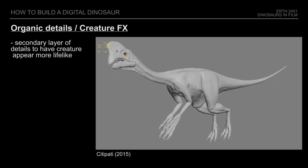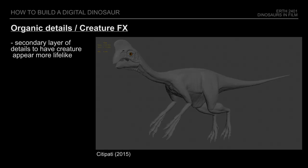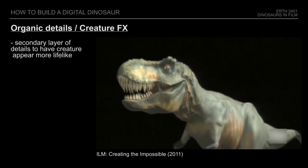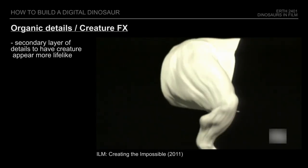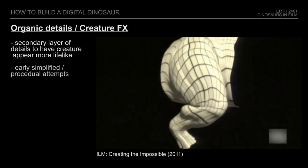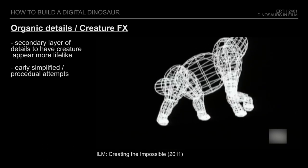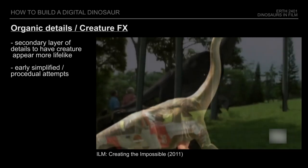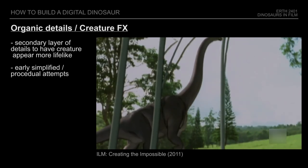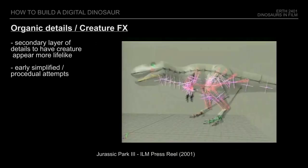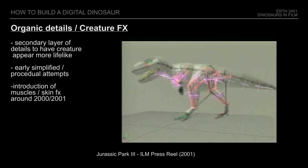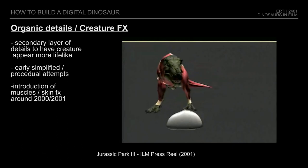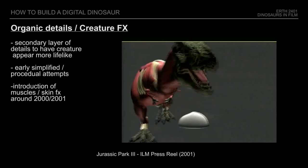But in the early days, that was of much less concern. When creating the very first CG creatures, one of the biggest challenges was in fact to keep the models from breaking apart and glitching. But with the continuing advancement of digital technology, increasing attempts were made to add more details — at first by animating small details by hand or trying to procedurally add deformations. But around 2000-2001, artists started actually introducing muscles which would bulge and stretch, as well as sliding skin.